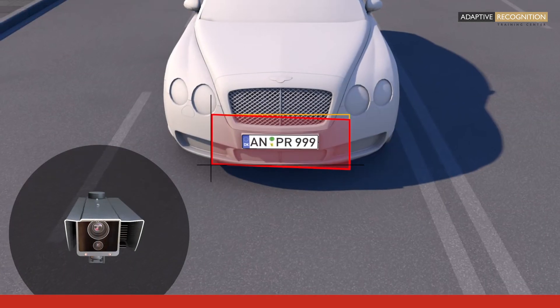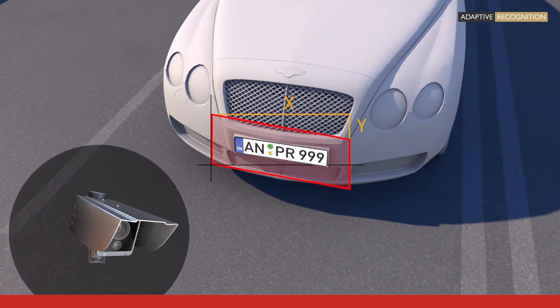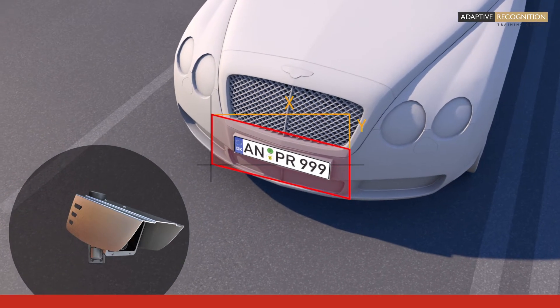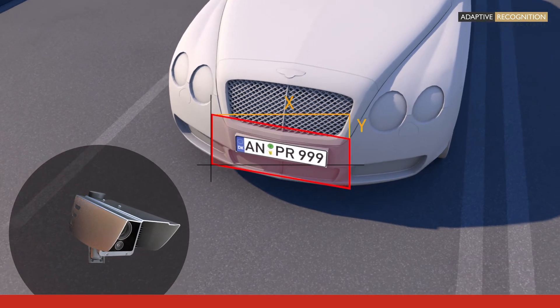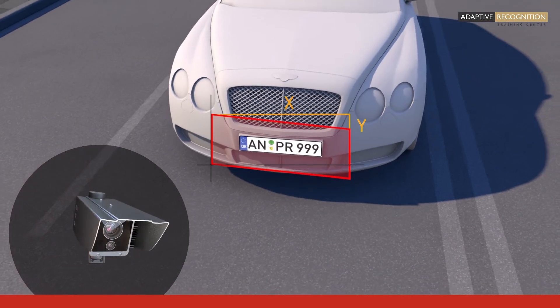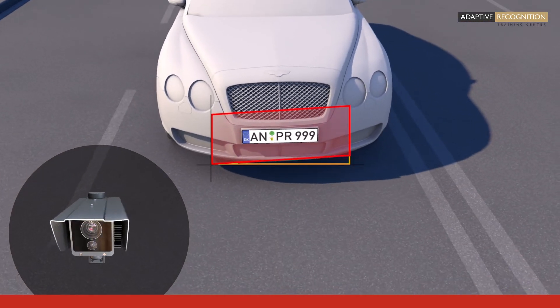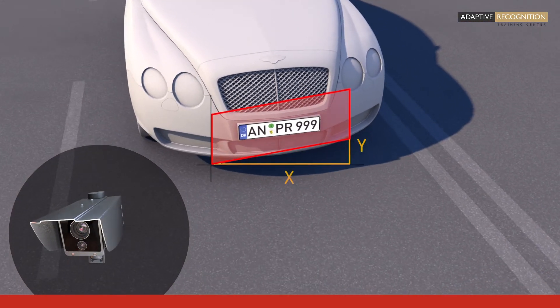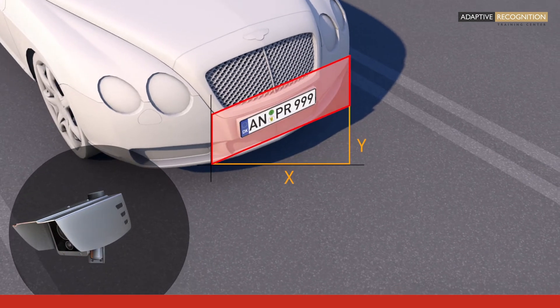The camera, which acts as the image source for OCR, can be installed in many ways. Many installation positions exist that can help in providing optimal images with minimal distortion.